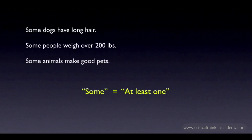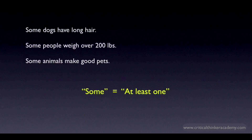Some is vague in one sense, but it sets a precise lower bound. If some dogs have long hair, then you can be certain that at least one dog has long hair. So, 'some people weigh over 200 pounds' means at least one person weighs over 200 pounds. 'Some animals make good pets' means at least one animal makes a good pet.